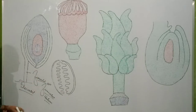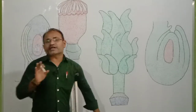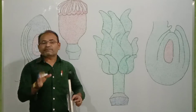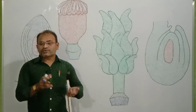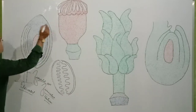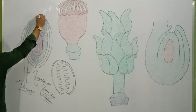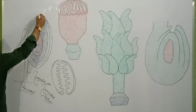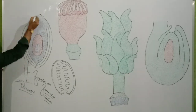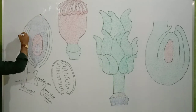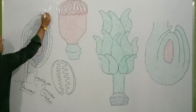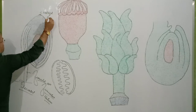The complete ovule is covered on all four sides by one or two protective envelopes. This protective envelope is called integuments. Where the integuments start to form and cover the ovule, that end is called the chalazal end.